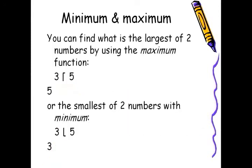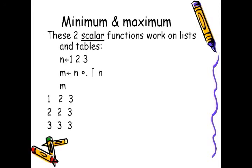Two more functions: minimum and maximum. You can find the largest of two numbers by using the maximum function. Which one is the largest of 3 and 5? 5. Or the smallest of two numbers with minimum. Which one is the minimum between 3 and 5? 3. Those two scalar functions, just like plus, minus, product, and divide, work on lists and tables. So if n is 1, 2, 3, saying m is assigned n jot dot maximum will give us a table of the largest numbers.